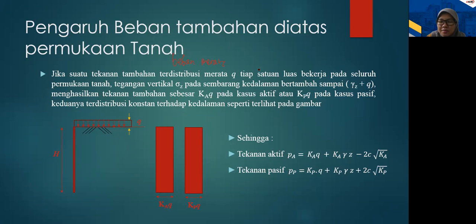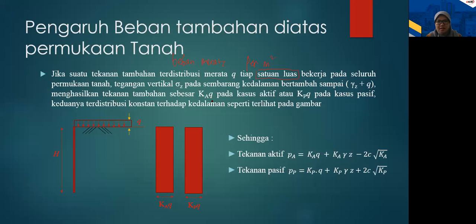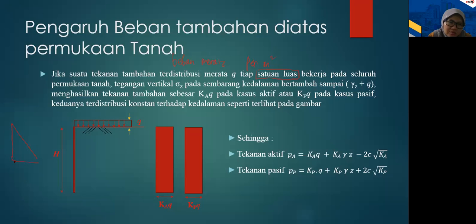Tiap satuan luas bekerja — tiap satuan luas berarti per meter persegi — bekerja pada seluruh permukaan tanah. Tegangan vertikal atau sigma-Z pada sembarang kedalaman itu bertambah sampai gamma Z plus Ki. Menghasilkan tekanan tambahan sebesar Ka dikali Ki kalau aktif, atau KP dikali Ki kalau pasif. Keduanya terdistribusi konstan terhadap kedalaman.